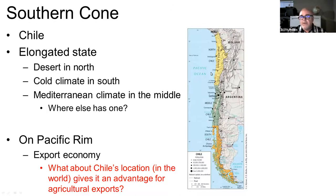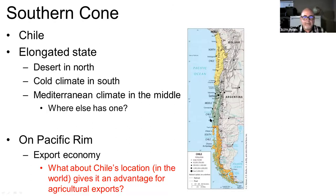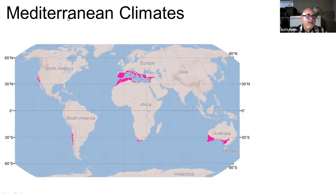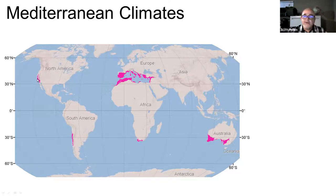Chile is on the Pacific Rim, meaning it can trade with countries across the Pacific using containerized shipping. A key question is: what about Chile's location gives it an advantage for agricultural exports? Mediterranean climates exist in California, Chile, and a few other places. These regions are great for wine and grape growing — Napa Valley, Southern Europe, Australia, and Chile all have good climates for growing table grapes or wine grapes.